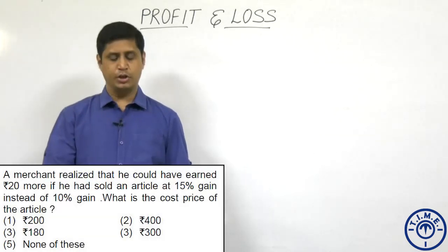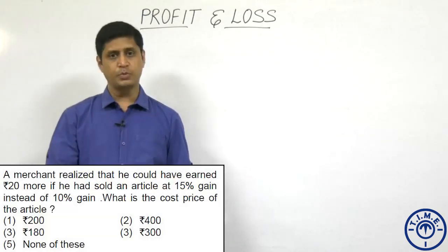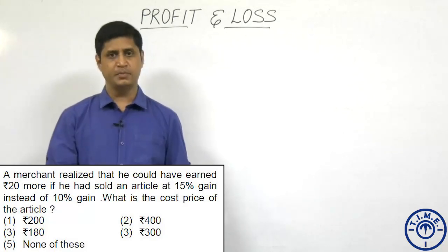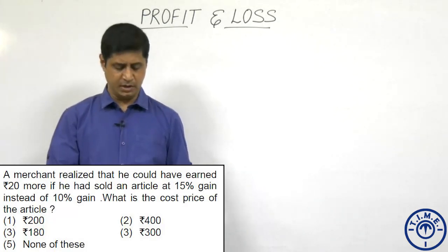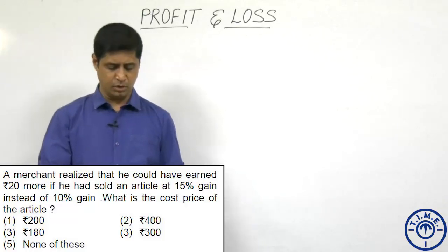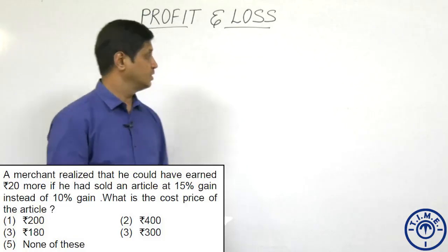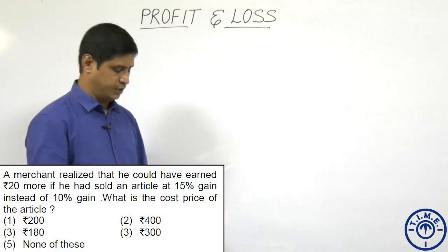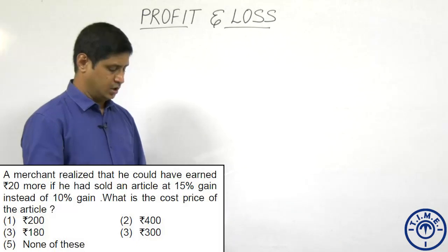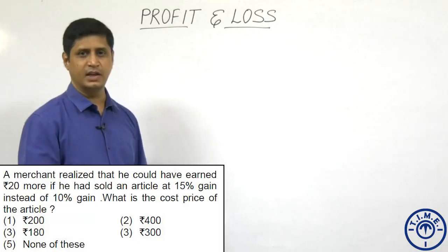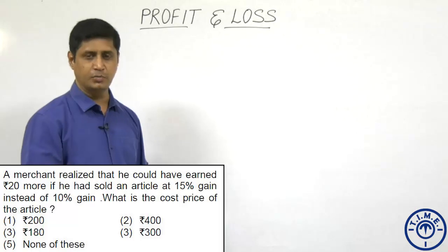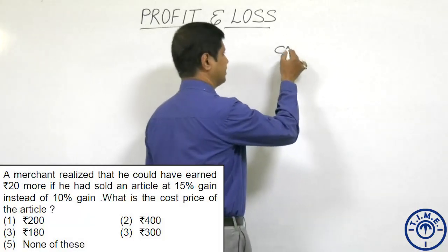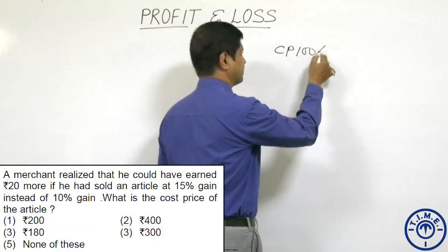A merchant realized that he could have earned ₹20 more if he had sold an article at 15 percent gain instead of 10 percent gain. What is the cost price of the article? The cost price is not given, hence I am assuming the cost price as 100 percent.